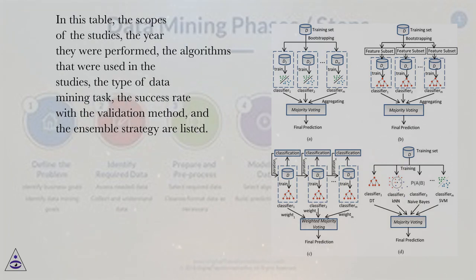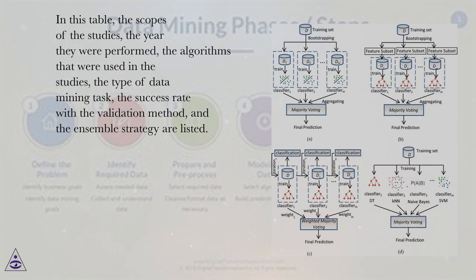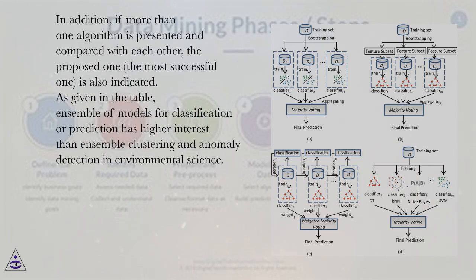In this table, the scopes of the studies, the year they were performed, the algorithms that were used in the studies, the type of data mining task, the success rate with the validation method, and the ensemble strategy are listed. In addition, if more than one algorithm is presented and compared with each other, the proposed one — the most successful one — is also indicated.